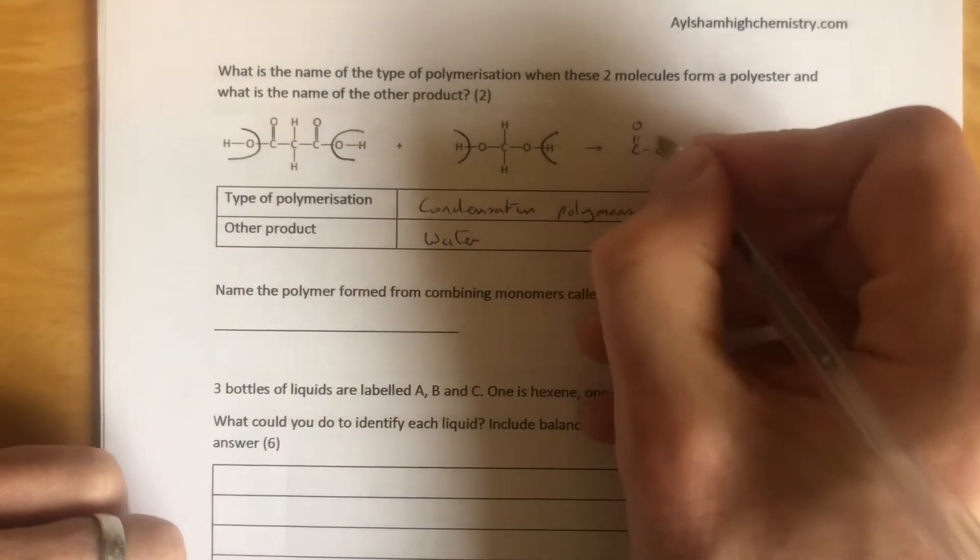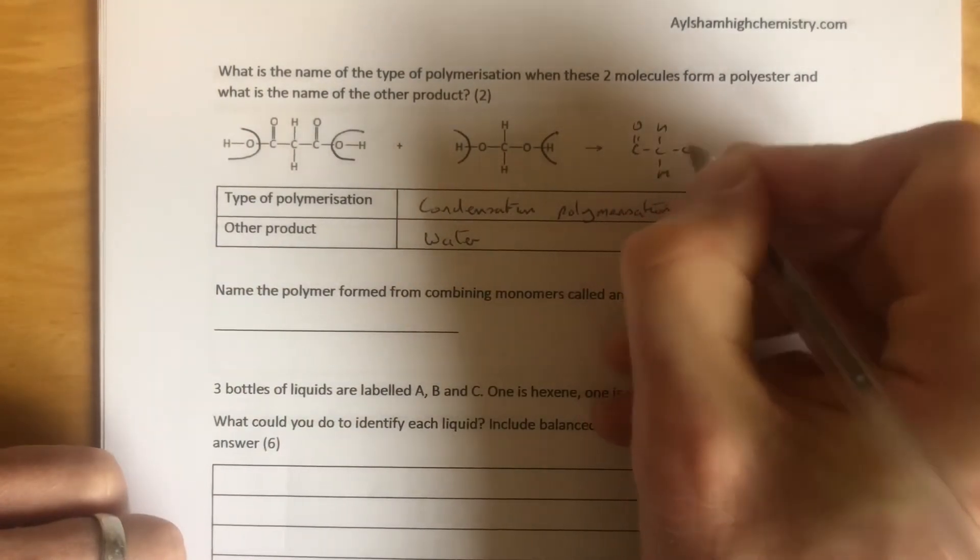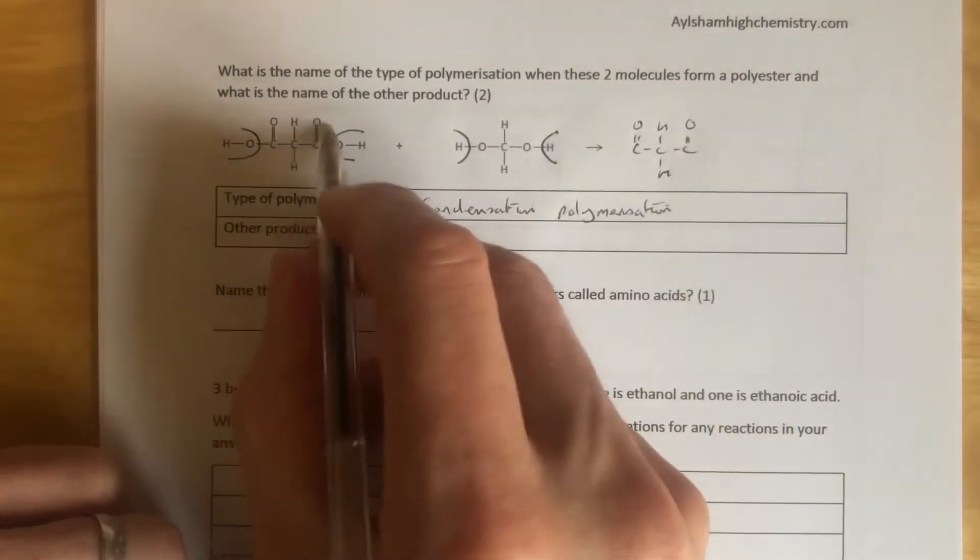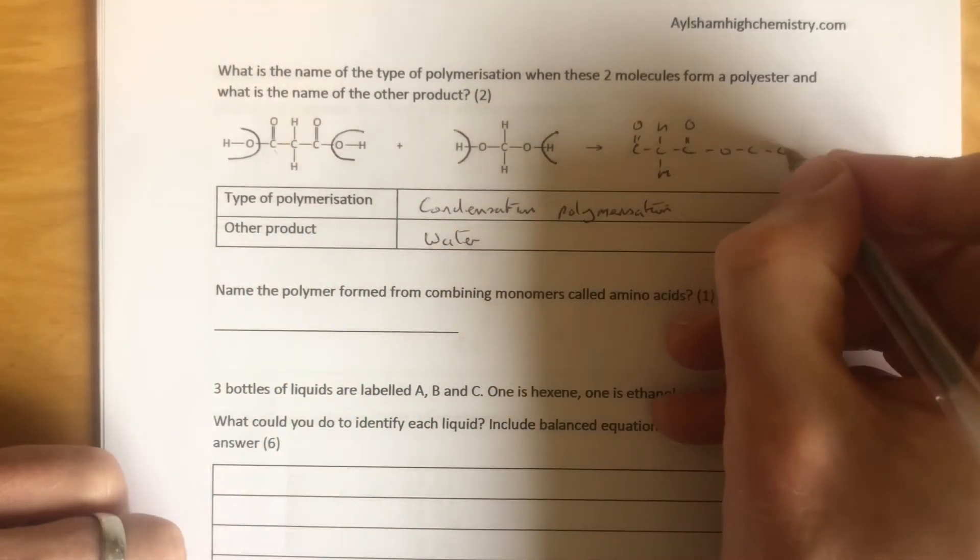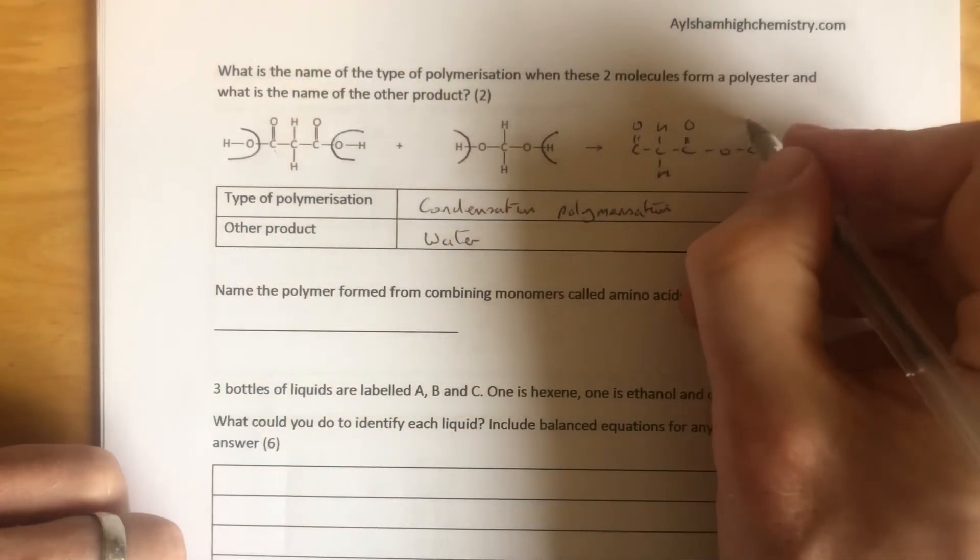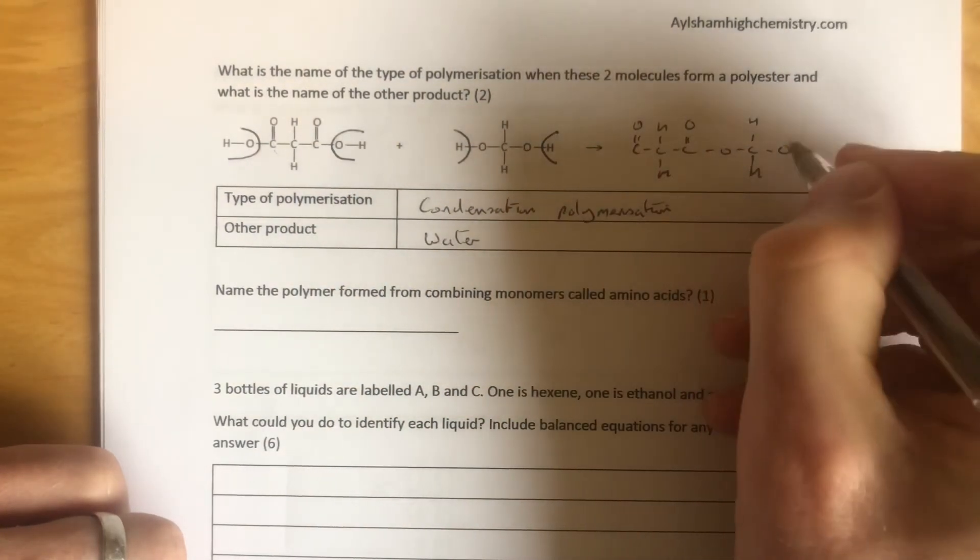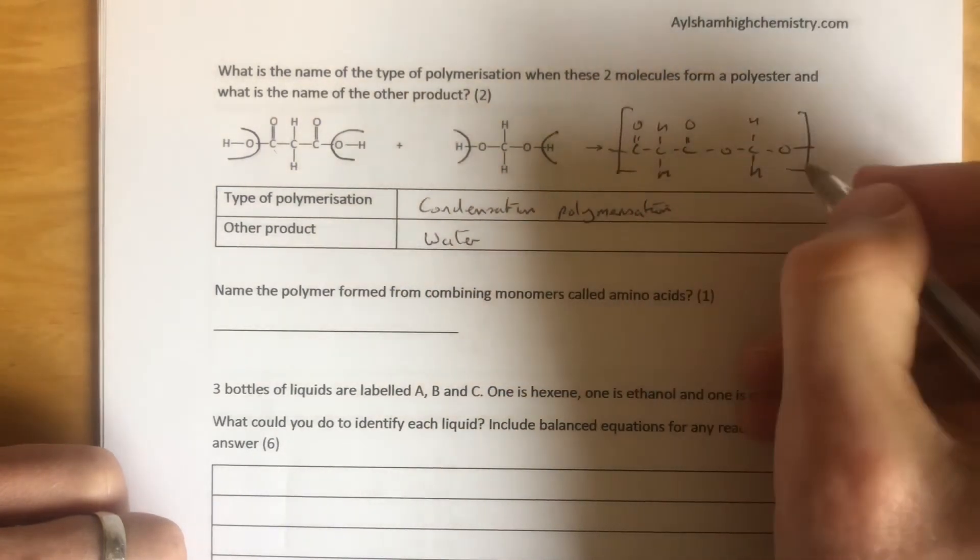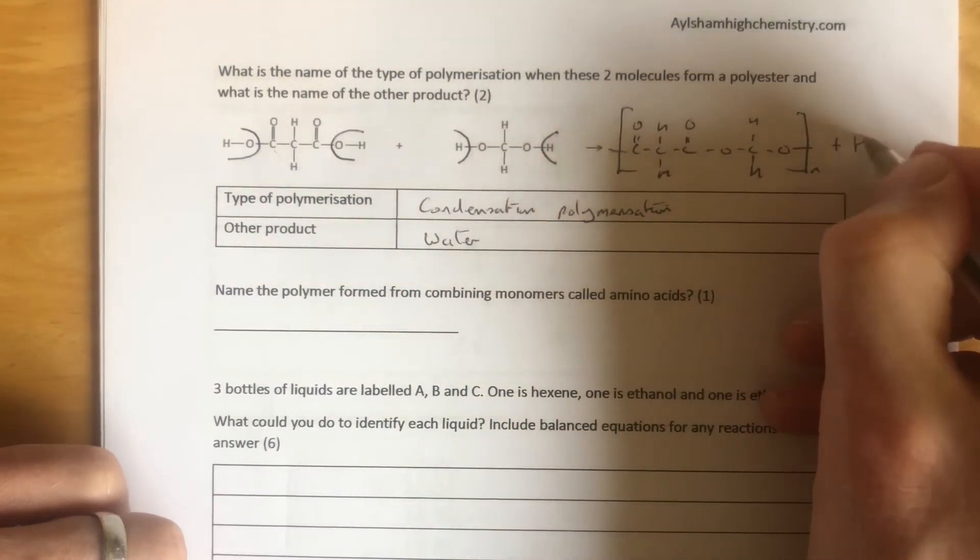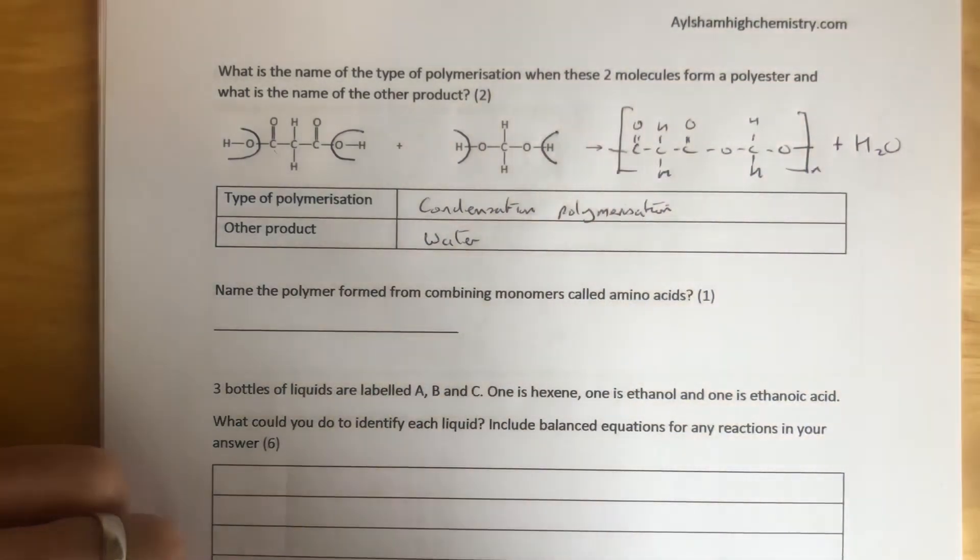Oxygen on that one, two hydrogens on this one, double bond oxygen on that one. So that's that one copied. Now over here, oxygen carbon oxygen, oxygen carbon oxygen, two hydrogens on the middle one. We just need to put a bond through the brackets there and there to show it goes on again and again. And don't forget the water, the other product.